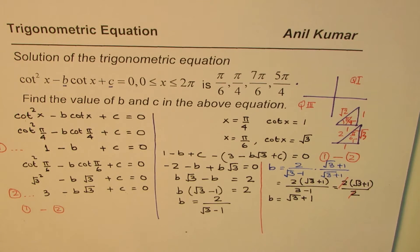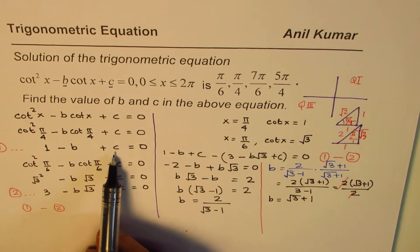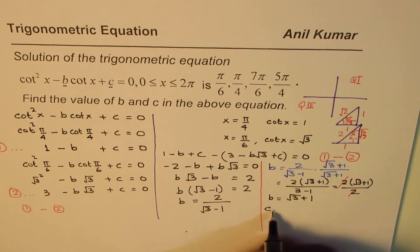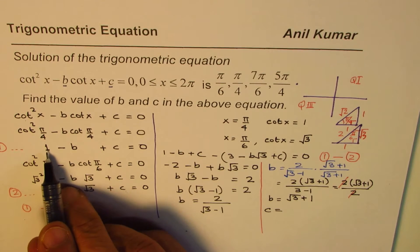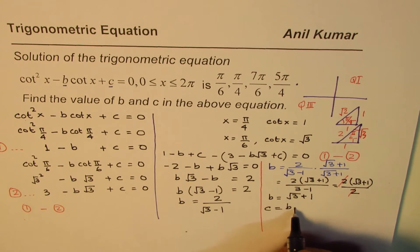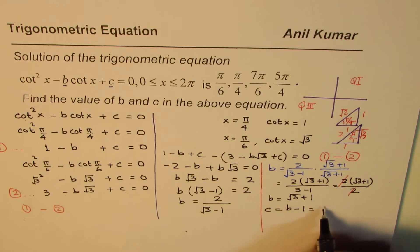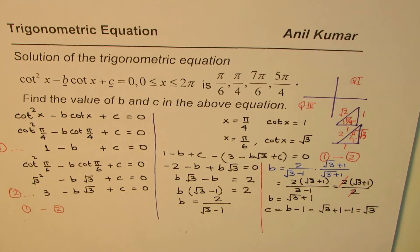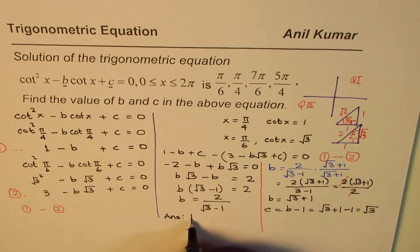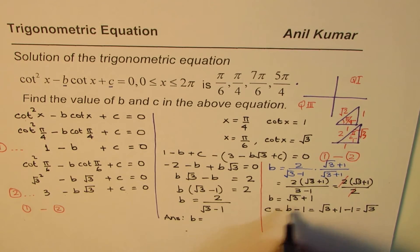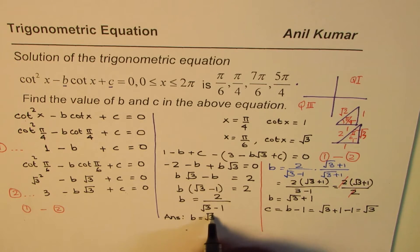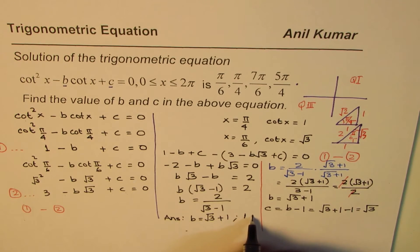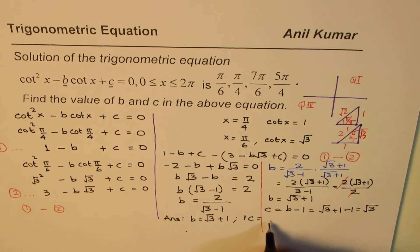Now that we have b, we can find c. From equation 1: c = b − 1. Since b = √3 + 1, we take away 1 to get c = √3. So the answer is b = √3 + 1 and c = √3.